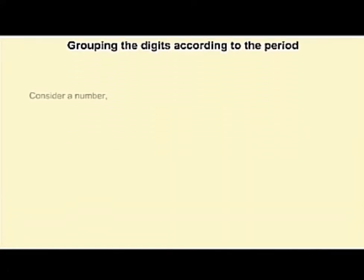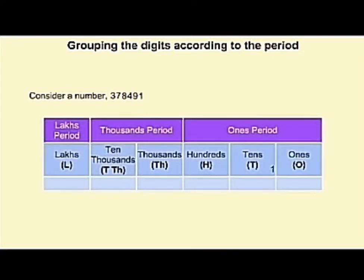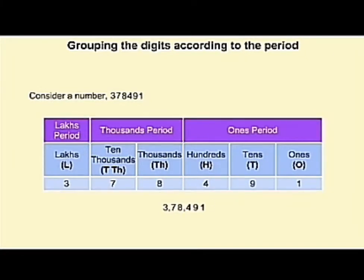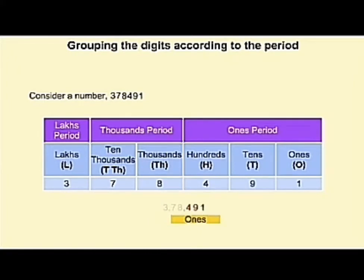Group the digits according to the period. Let us consider the number 378491. Place the six-digit number in the place value chart. For writing a six-digit number, group the digits according to the periods in the table and then place commas to separate the digits. To spell out this number, the digits in the lakhs period have to be read first, followed by the thousands period and then the ones period.